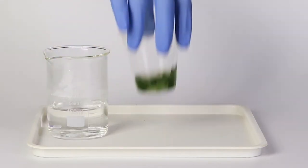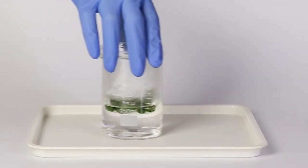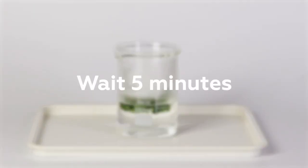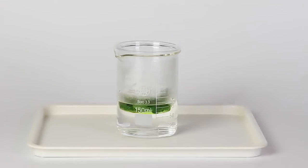Pour some hot water into the beaker. Then put the cup containing the mixture into the beaker. Wait five minutes. While you're waiting, the chlorophyll in the leaves will dissolve in the alcohol.